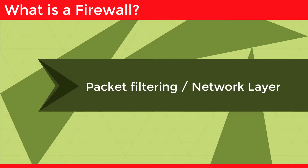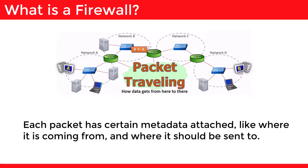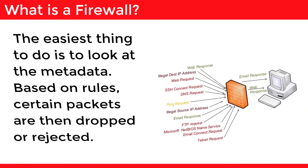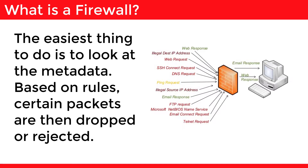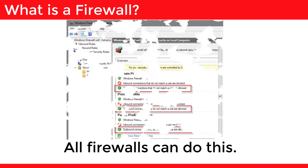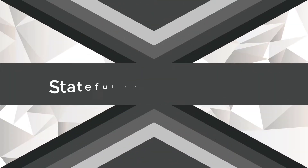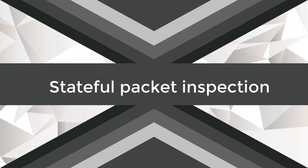Now let's look into different kinds of firewalls. Starting with packet filtering, or network layer: data travels on the internet in small pieces, these are called packets. Each packet has certain metadata attached, like where it is coming from and where it should be sent to. The easiest thing to do is to look at the metadata — based on rules, certain packets are then dropped or rejected. All firewalls can do this; it is done at the network layer.